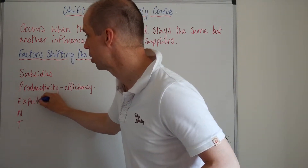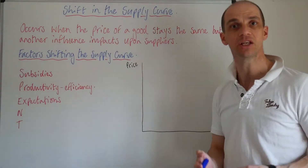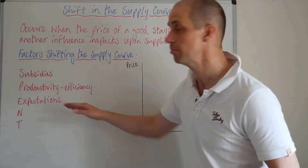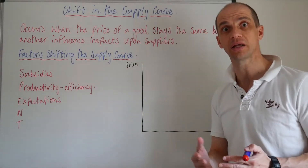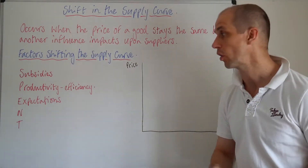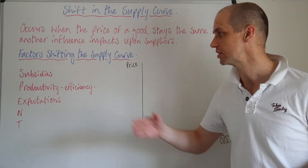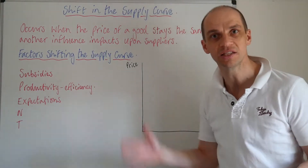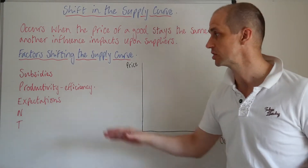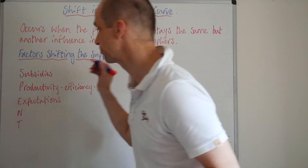Next, expectations. So expectations of any price changes or any increases in demand is likely to mean that the firm will want to try and increase the available supply. That could be as a result of perhaps increasing temporary seating around the stadium for a sold-out event, so there are more tickets that could be sold, as an example.